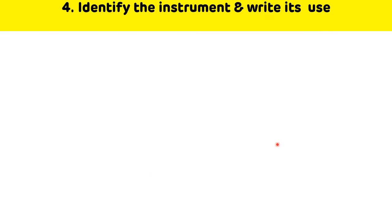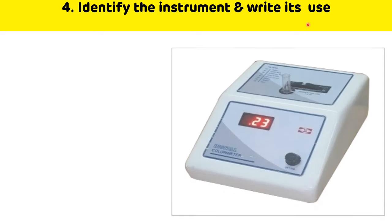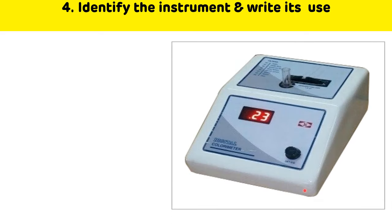Fourth question: identify the instrument and write its use. This instrument is a colorimeter, and it is used in quantitative estimation practicals in biochemistry.